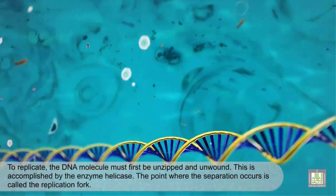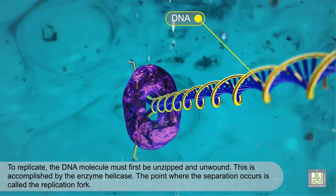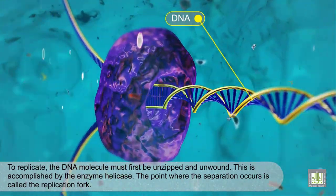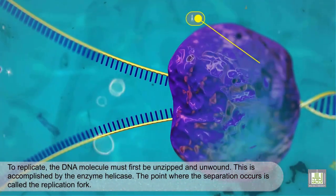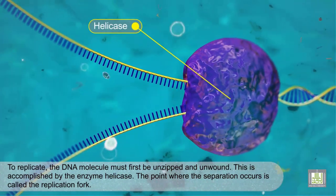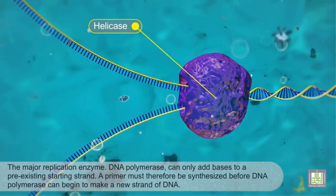To replicate, the DNA molecule must first be unzipped and unwound. This is accomplished by the enzyme helicase. The point where the separation occurs is called the replication fork.